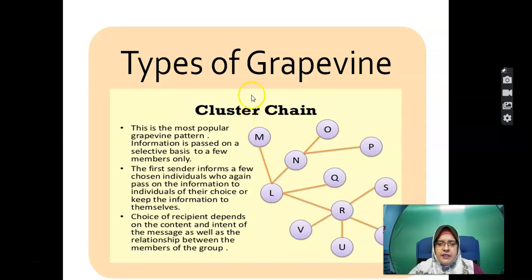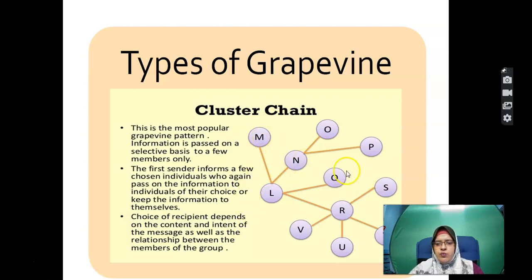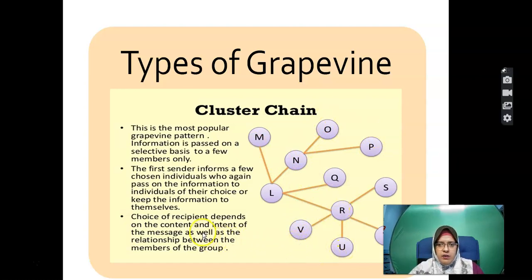In the cluster chain, the sender chooses who to tell. For example, L tells M, Q, and R — only four people. N tells O and P. R tells S, T, U, and V. The sender selects specific members to share with — essentially saying 'don't tell anyone else.'